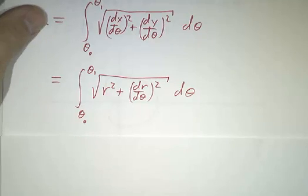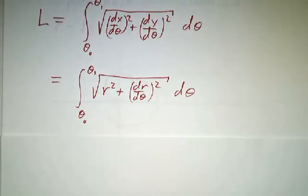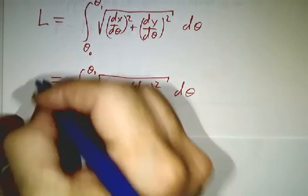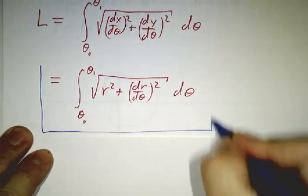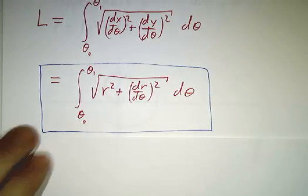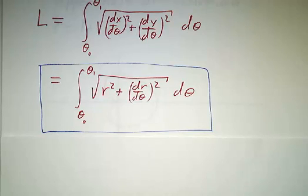And that just becomes the integral of r squared plus dr dθ squared all square rooted dθ. Okay, so that's the formula.